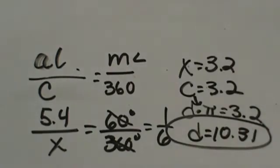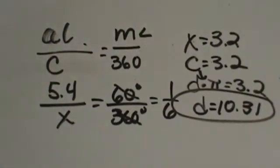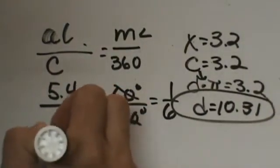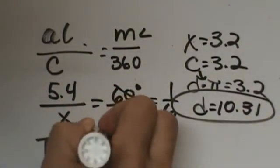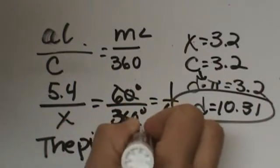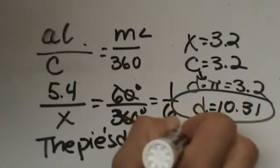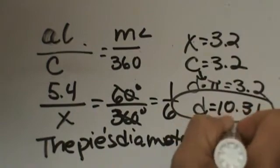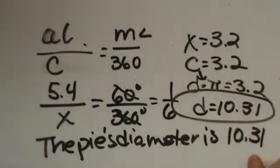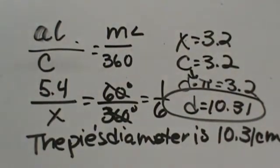That is how you work that problem backwards. That would be the diameter of the pie. If we had to write a sentence we would say the pie's diameter is 10.31 centimeters. That is how you could answer that question in a sentence.